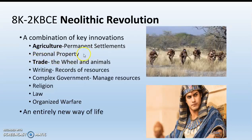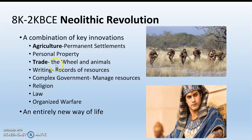We also have the introduction of personal property. Now that we have these big houses built next to our farm, we've got room to store things — my things versus your things. We've got trade: one community or civilization trading with another. The two big things that are going to make trade grow really quickly are the invention of the wheel and the domestication of animals like horses that can pull wagons.